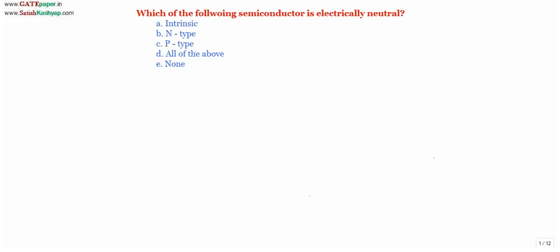Today we will see which semiconductor is electrically neutral — will it be intrinsic, or n-type, or p-type? Generally we think that intrinsic semiconductor is electrically neutral, n-type semiconductor is electrically negative, and p-type semiconductor is electrically positive. But that is wrong. All three semiconductors — intrinsic, n-type, and p-type — are electrically neutral.